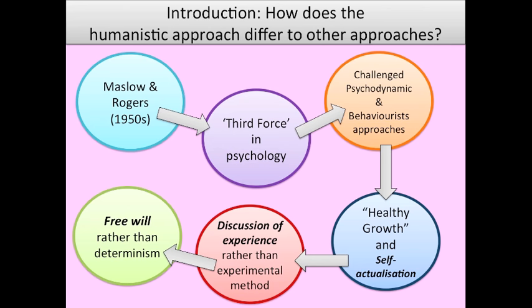It challenged both of those approaches because Rogers thought that Freud, in the psychodynamic approach, had dealt with the sick half of psychology, whereas the humanistic approach is concerned with healthy growth for each individual person and something called self-actualisation, which is where you reach your full potential. It challenged the behaviourist approach because it emphasised focusing on discussion of conscious experiences rather than relying on the experimental method of behaviourism, such as Pavlov and Skinner's experiments on dogs and rats.